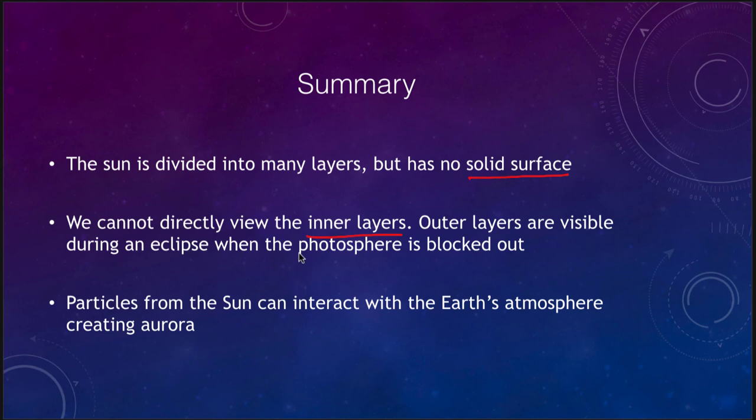We can see the photosphere. That is what we see, the visible surface, and some of those outer layers are visible during an eclipse when the photosphere is blocked. And then we looked at how particles from the Sun and the solar wind can interact with the Earth's atmosphere, giving us the auroral displays that we see here on Earth. So that concludes our lecture on the structure of the Sun. We'll be back again next time for another topic in astronomy. So until then, have a great day everyone and I will see you in class.